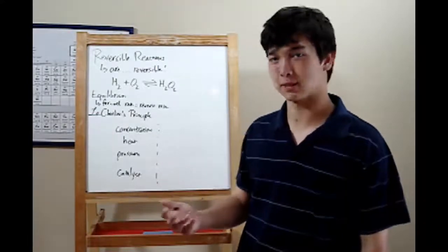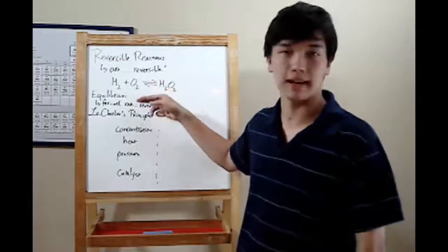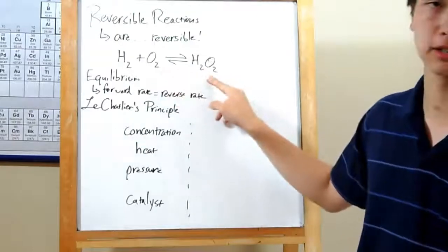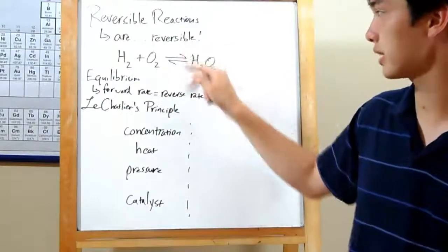Reversible reactions are reversible. You can tell the difference between them and regular reactions on paper by checking the arrow. Regular reactions just have a left to right arrow. Reversible reactions have this cool-looking double arrow.